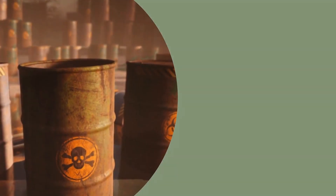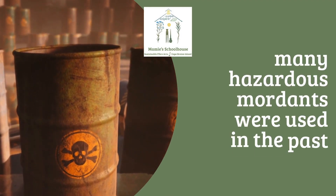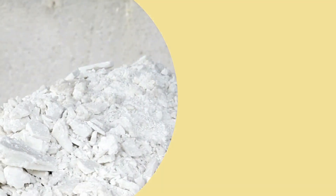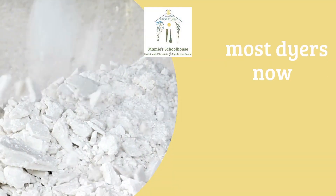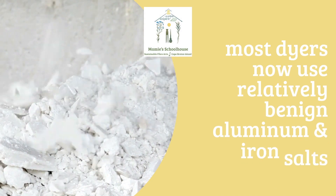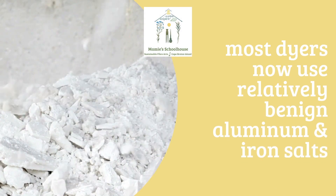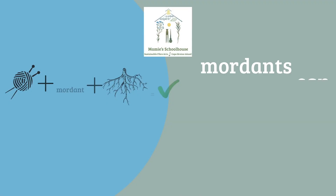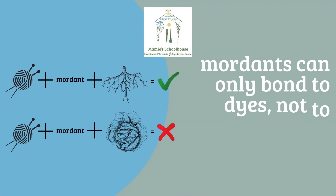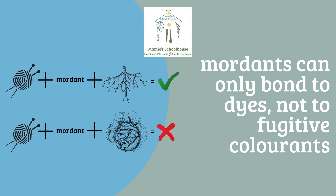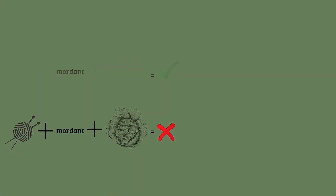In the past, many toxic mordants were used, such as chrome. Nowadays, most natural dyers only use the relatively benign aluminum and iron metal salts. Mordants cannot bond fugitive colorants to your fibers — they can only bond with true dyes.